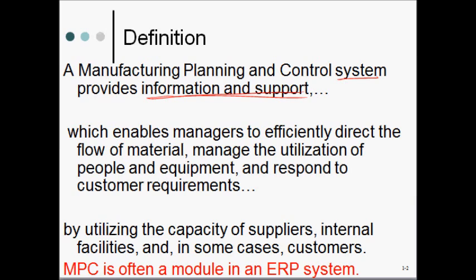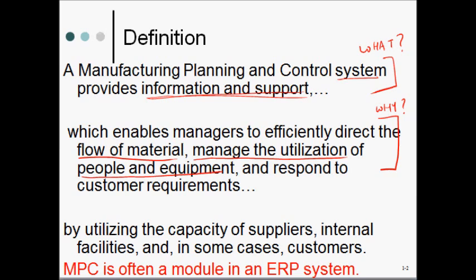Now, why do we need this? The next part of this definition describes why we need manufacturing, planning, and control. It enables managers to efficiently direct the flow of material. It's important in today's world to be able to direct the flow of material such that we make the products as and when customers require them. We also are looking at MPC to manage the utilization of people and equipment.